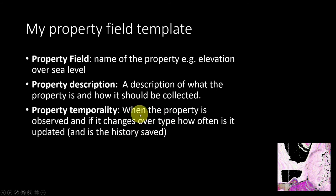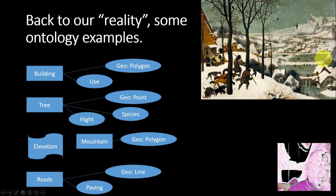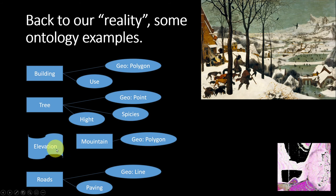Going back to our diagram, one more important thing: we need to specify the geometry of the object. For example, a lake is a polygon, a building is a polygon, tree species are geometry points, and elevation is a field. From elevation you could derive mountains as polygons — where elevation is over a certain threshold. Roads have a type of paving and are represented as lines.